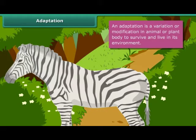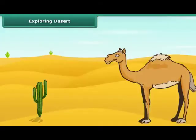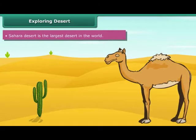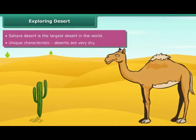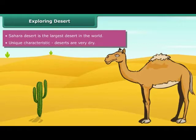Did you know that the Sahara Desert is the largest desert in the world? It is located in Africa. Deserts have a unique characteristic of being dry. They are hot and dry due to high rate of evaporation and limited rainfall. Plants and animals living in deserts have modified features to survive in such extreme conditions.